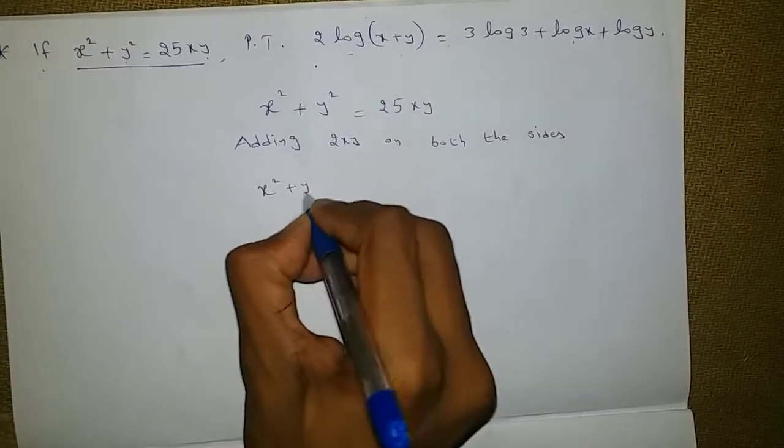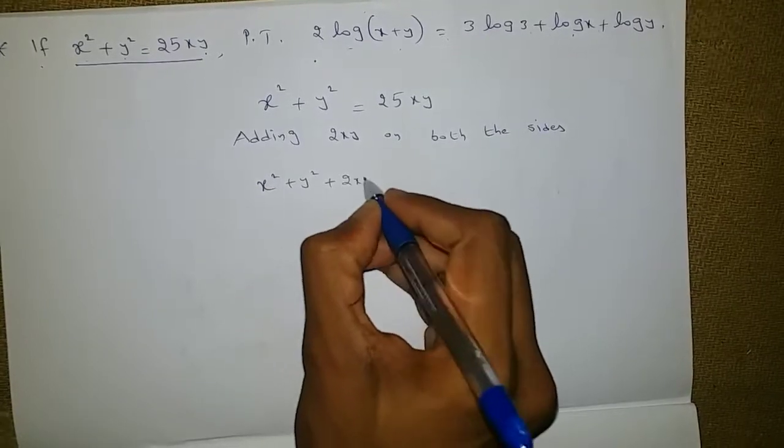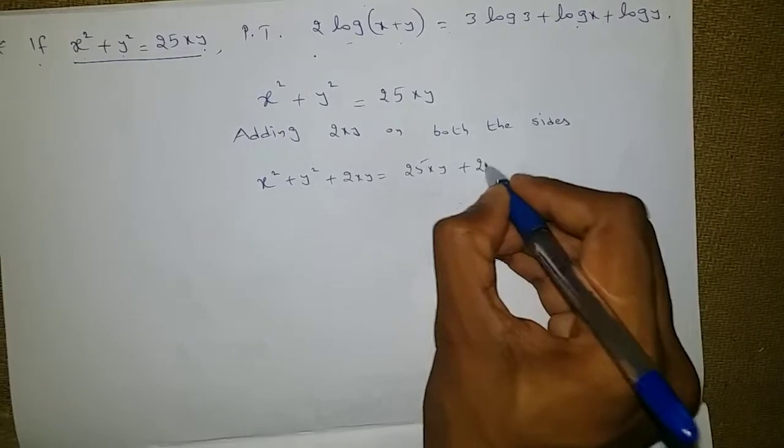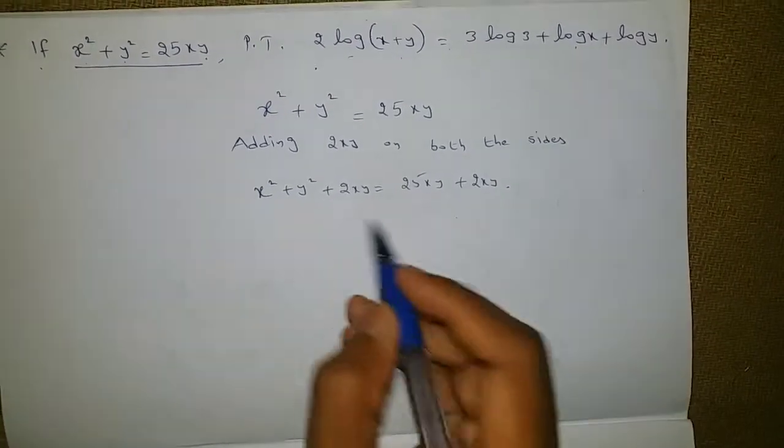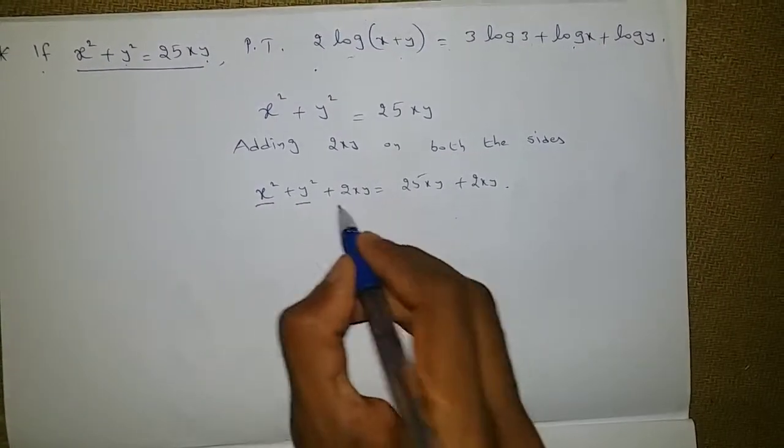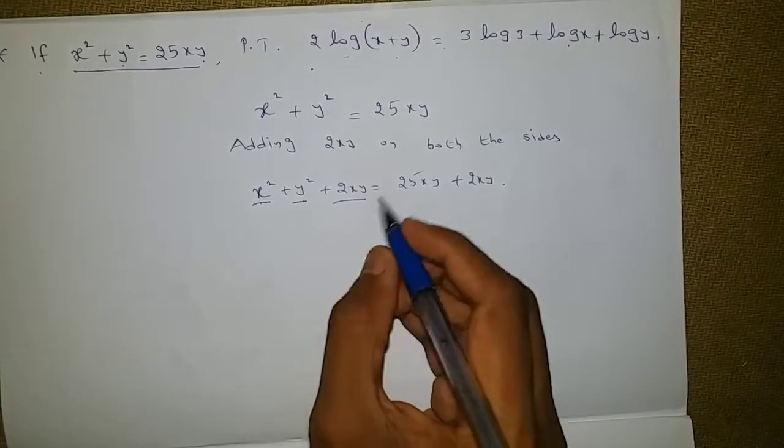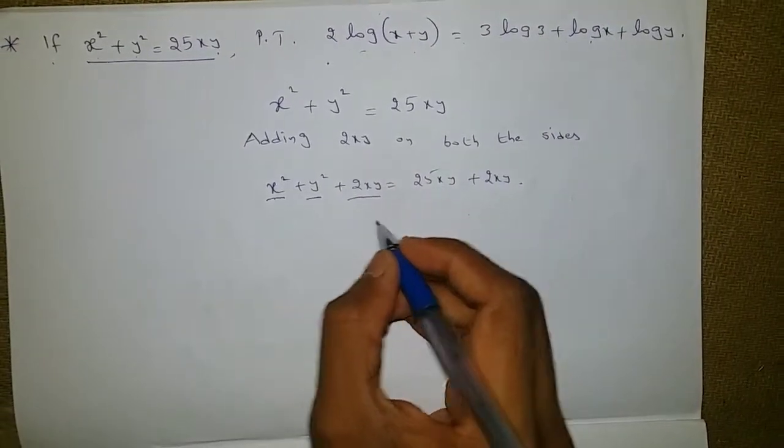x² + y² + 2xy = 25xy + 2xy. x² + y² + 2xy is in the form of a² + b² + 2ab, which is the algebraic identity for (a+b)².